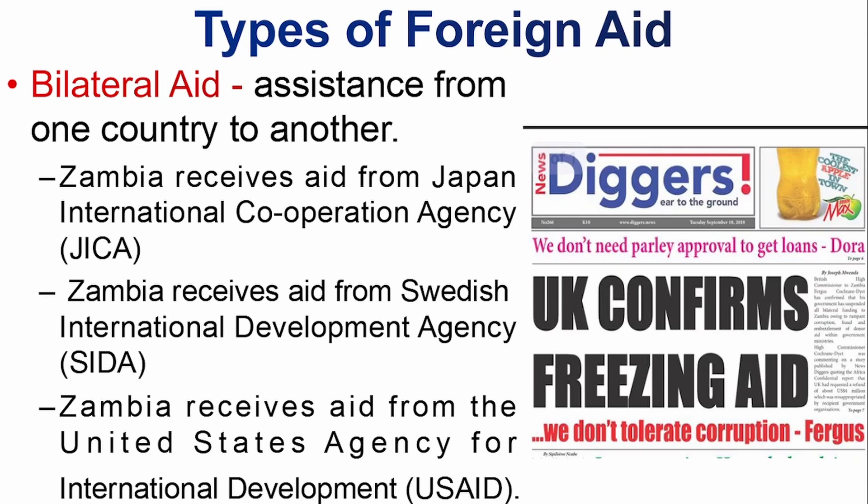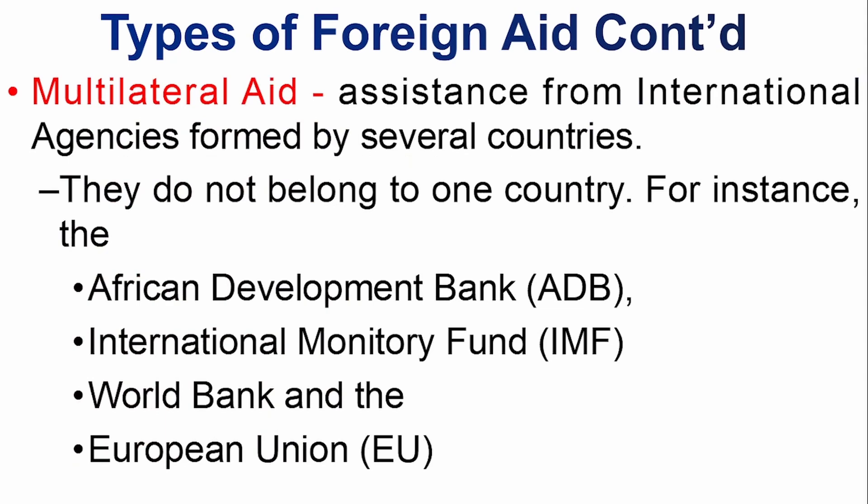Zambia has received bilateral aid from the UK, China, Russia, and many other countries. The second type is multilateral aid, which is assistance from international agencies formed by several countries. These agencies do not belong to one particular country; they are formed by a number of countries coming together. Examples include the African Development Bank, the International Monetary Fund, the World Bank, and the European Union.